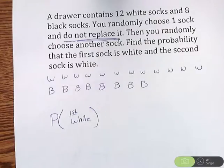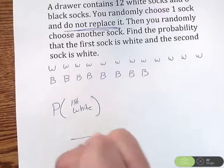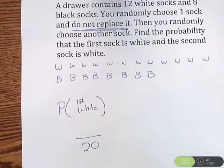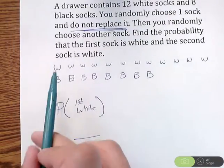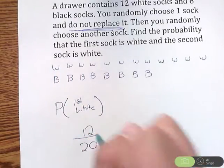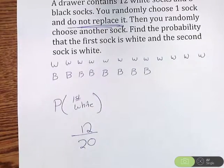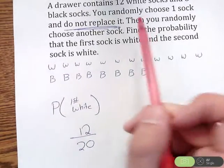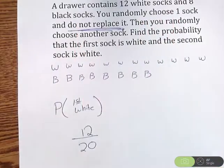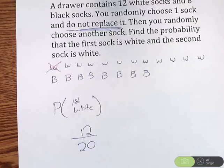Probability that the first is white. Looking at all these, I have 20 total outcomes available. And I have 1, 2, 3, 4, 5, 6, 7, 8, 9, 10, 11, 12 options for that white sock. So 12 out of 20 is the probability that I reach into this drawer, pull out a white. But here's the thing: you randomly choose one sock and do not replace it, so that means one of my white socks goes away.